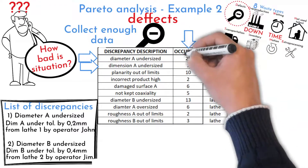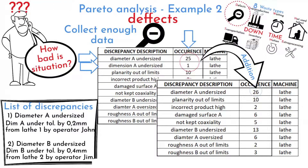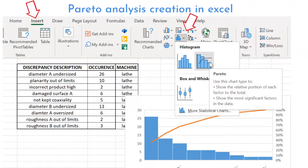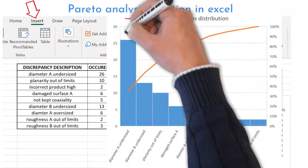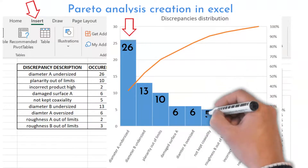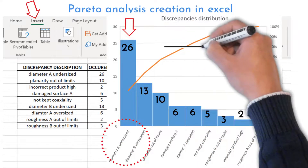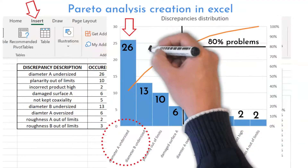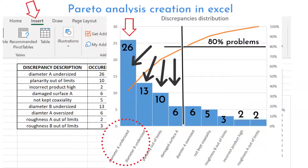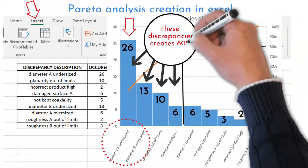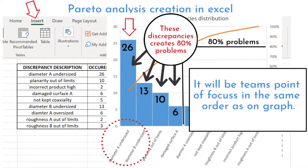For example, 'diameter A undersized' and 'dimension A undersized' are the same. We can create an occurrence distribution by naming and counting each discrepancy, and then simply create a Pareto distribution. Discrepancies identified by the same name are grouped into one column, where column height represents count. Notice there may be challenges with diameter A and B undersized and oversized — we can merge both together due to their similarity. More similar data helps with better root cause identification. It then becomes obvious what is the most important troublemaker the team must focus on.